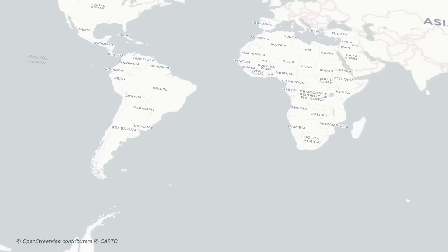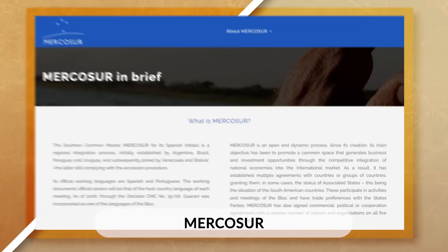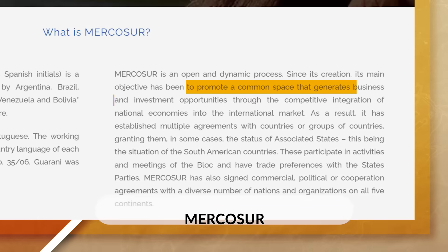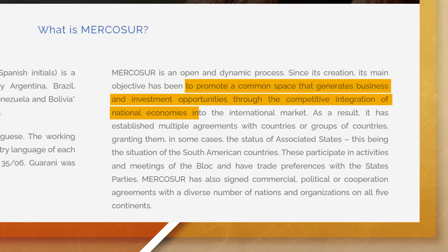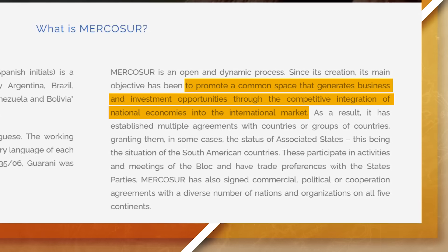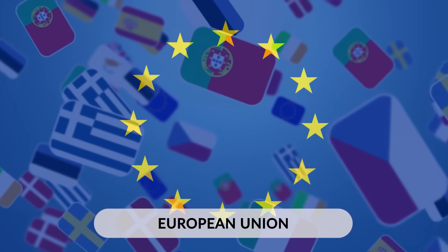We can also look at other organizations that promote globalization, such as Mercosur, the European Union, and OPEC, just to name a few. Mercosur consists of countries in South America, with its main objective being to promote a common space that generates business and investment opportunities through competitive integration of national economies into the international market. The European Union is a political and economic union of states primarily located in Europe, created with the goal of promoting peace, stability, and economic prosperity in the region.